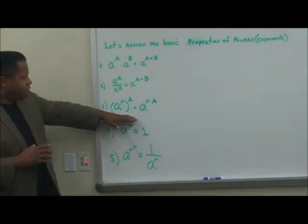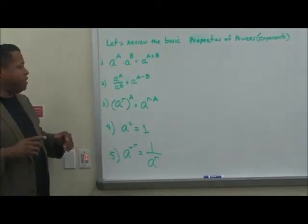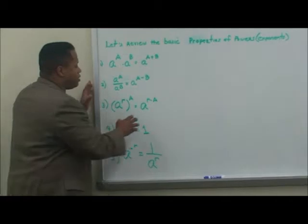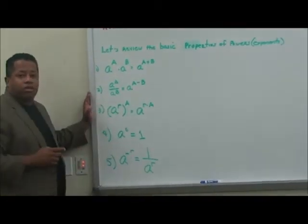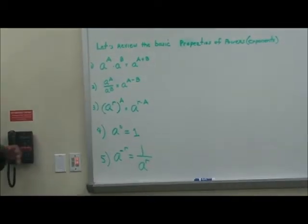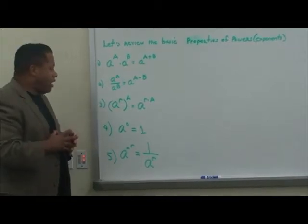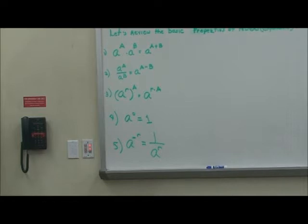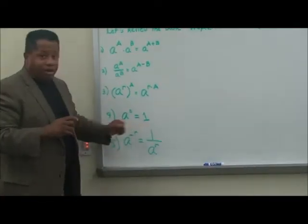This expression here is considered raising a power to a power. In this situation, you're going to multiply both exponents — you multiply R times A — and that gives you the solution. As we know, A to the zero, or any number to the zero power, will be equal to one.